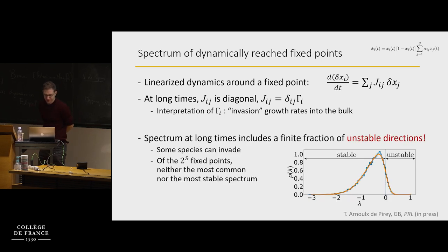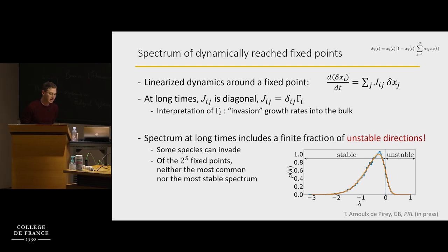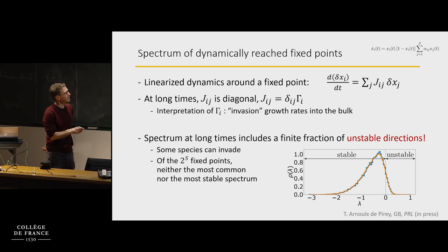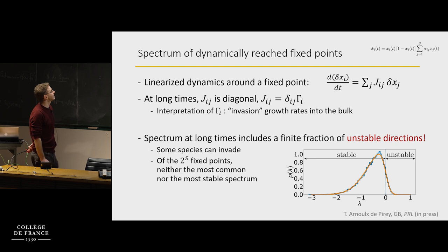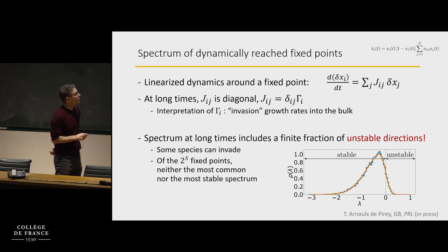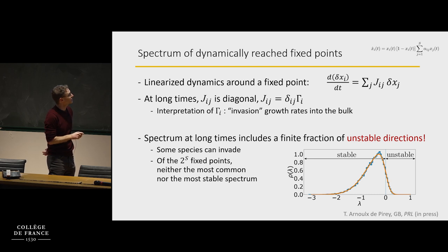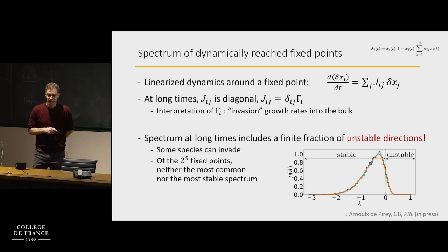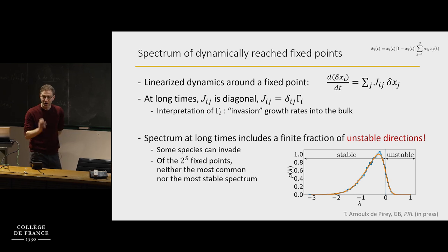The full spectrum at long times can be calculated exactly — this is the smooth orange solid line, and below you can see a histogram from simulation that matches beautifully. The most important thing to notice is that the vertical dashed line is zero. All the directions with positive gamma are unstable directions. At long times, all fixed points visited have this spectrum of eigenvalues and they're all unstable.